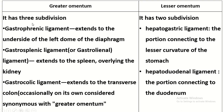The sub-divisions of the greater omentum — it has three parts: the gastrophrenic ligament, which extends from the stomach to the diaphragm; the gastroplenic ligament, which extends from the stomach to the spleen; and the gastrocolic ligament, which extends to the transverse colon.